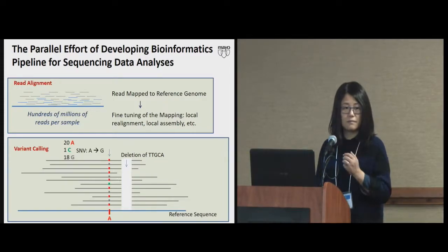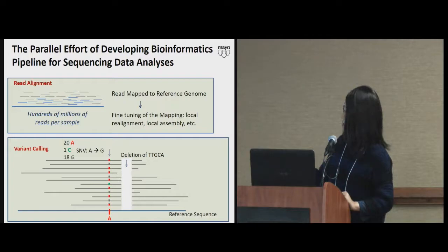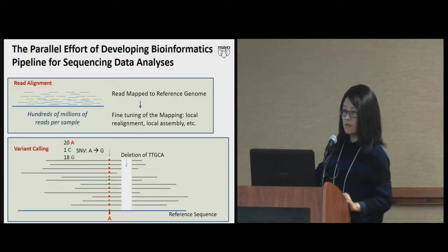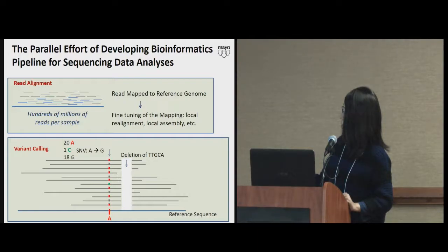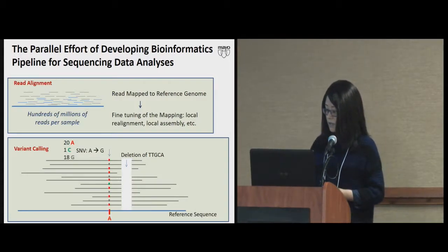After that, you do something called variant calling. You trust the map, look at each location, and count how many A's, G's, C's, and T's there are. If the reference says it should be an A and you found plenty of G's, you've found a variant from A to G. Sometimes you find a gap in the individual's reads versus the reference — that's a deletion. That's the simplified version of variant calling.